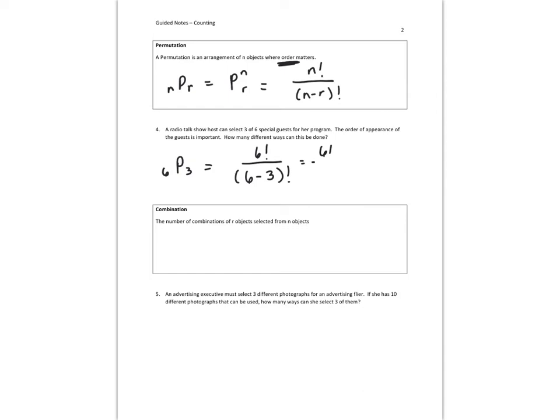And that's six factorial over three factorial. Watch how I do this. I'm going to write the six factorial out, but I'm going to stop at three factorial so I can cancel the three factorial in the denominator. So I'm left with six times five times four, and that's 120. Order matters.